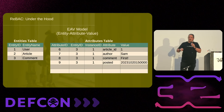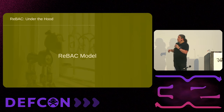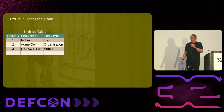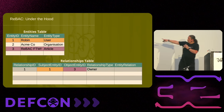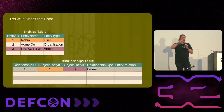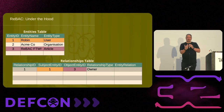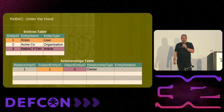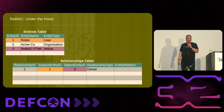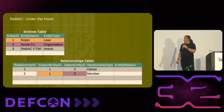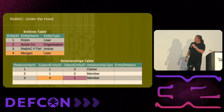The only reason I tell you about EAV is because this is very similar to the way that REBAC is managed under the hood. We've got entities on the left-hand side: Robin is a user, Acme Co is an organization, and 'Reback for the Win' is an article. Down here we have some relationships — subject entity ID and object entity ID. Subject one, the user, relates to entity ID three, the article, with a relationship type of 'owner'. Therefore we know Robin is the owner of the article. Robin (user one) is also a member of organization Acme Co, and Morgan (user four) is a member of Acme Co as well.